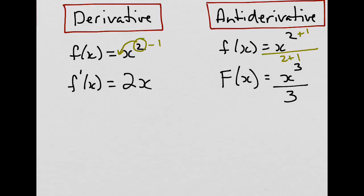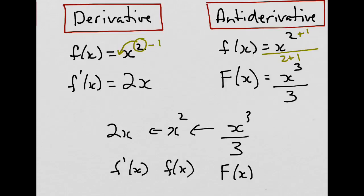We end up with a progression. So, you have the function x squared, and its derivative becomes 2x, and then its antiderivative becomes x cubed over 3, such that the derivative of the capital F function is the small f function, and the derivative of the small f function is the f prime of x function.